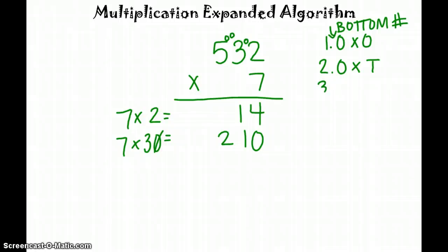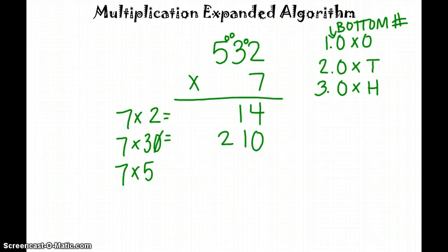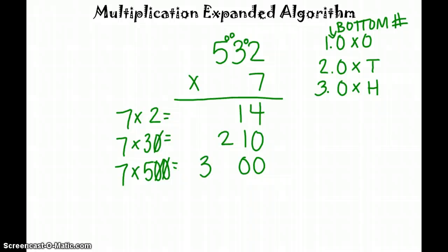Now our third step is to do our ones place times our hundreds place. So we're going to take 7, again because we start with our bottom number, times 500, because the 5 is in the hundreds place. This time we're not going to have any ones or tens, so we have two zeros. And 7 times 5 is 35 — put our comma in between our thousands and hundreds.